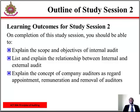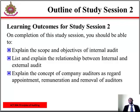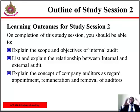Outline of study session 2. After you might have studied this session, you should be able to explain the scope and objectives of internal audits. You should be able to list and explain the relation between internal and external audits. And finally, you should be able to explain the concept of company auditors as regards appointments, remuneration and removal of auditors.